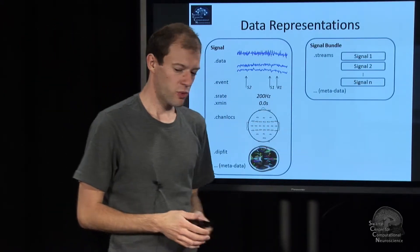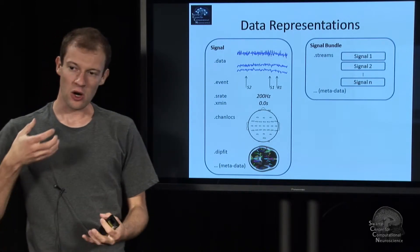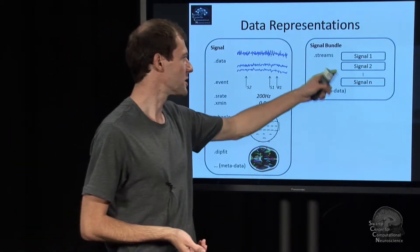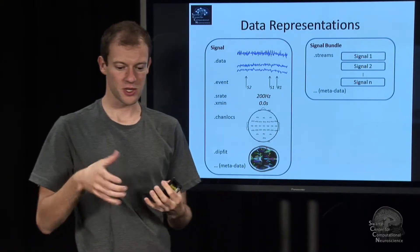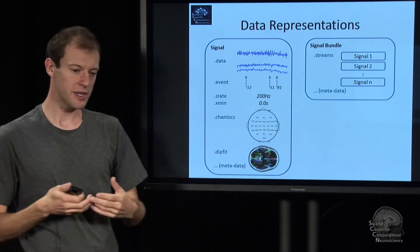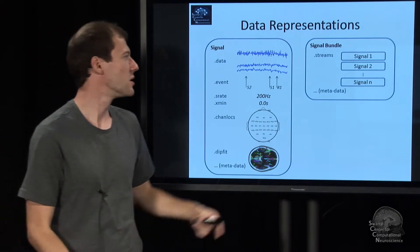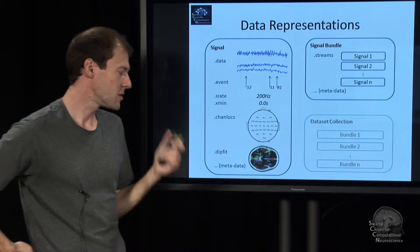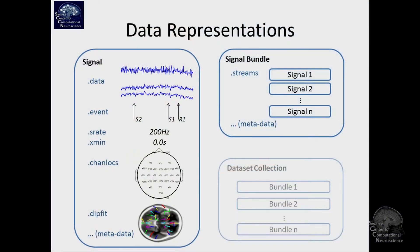Because BCIDAP supports multiple concurrent streams that you can process, there is a data structure that's just a bundle — a group of streams that cover the same time range, like EEG, EMG, and an eye tracker. That's a struct with a dot-streams field which is a cell array. There's also a collection structure, which we probably won't discuss in this lecture — it's basically a cell array of signal bundles.